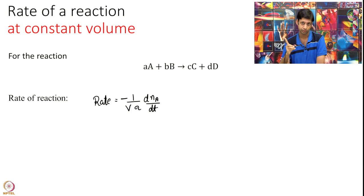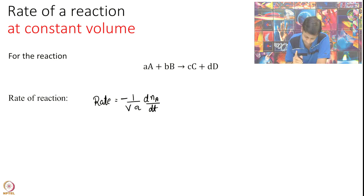If volume is constant, there is a big if and in chemistry we often deal with such reactions in solutions. When you mix two reagents typically the volume is not changing by a lot. But nonetheless, if volume is constant I can write this as dNA over volume over dt and so this becomes equal to minus 1 over a d concentration of A over dt where concentration is defined to be NA over volume.